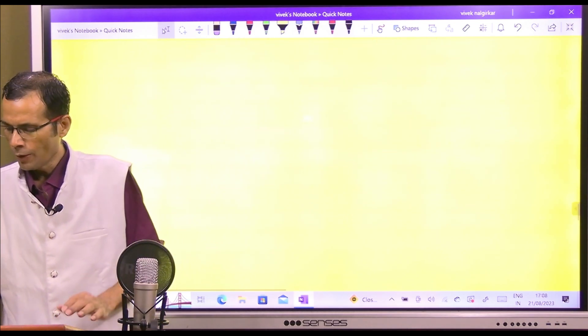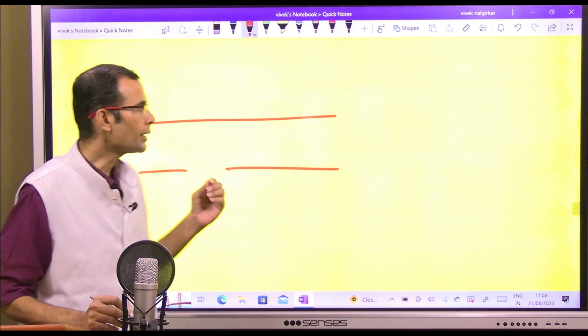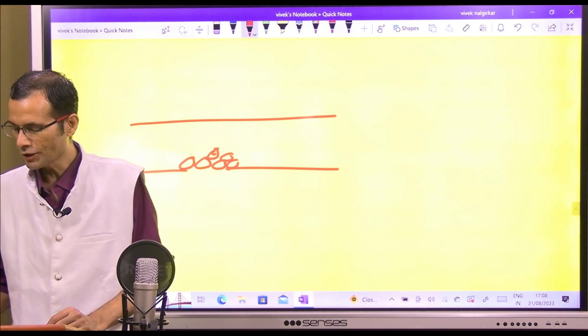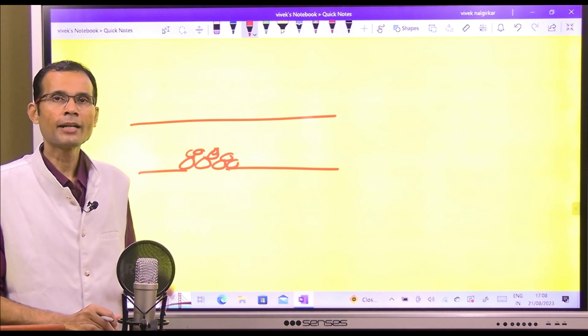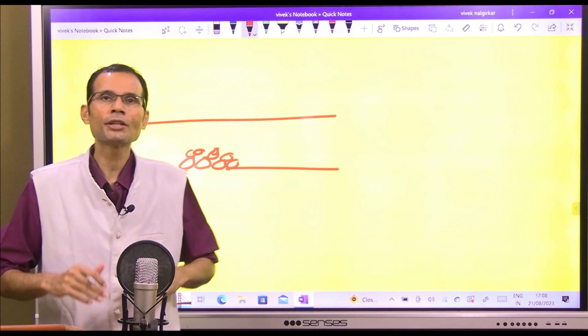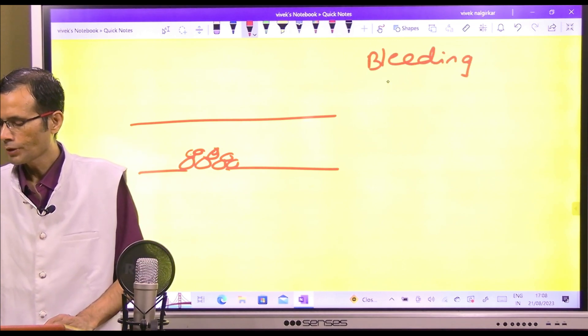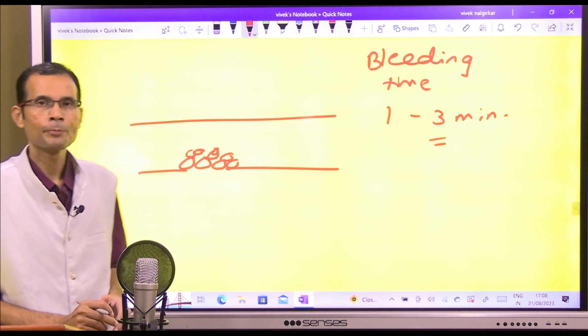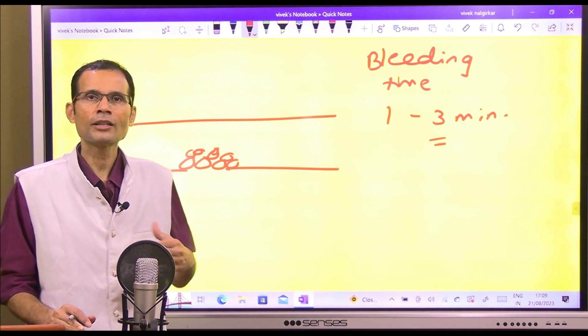Whenever there is a rupture of the blood vessel, within one to three minutes platelets would come into that region. They adhere to each other and they seal that injury, and the bleeding is stopped. This occurs within one to three minutes after the injury, so our normal bleeding time is one to three minutes - that is from the onset of bleeding to the stoppage of bleeding.